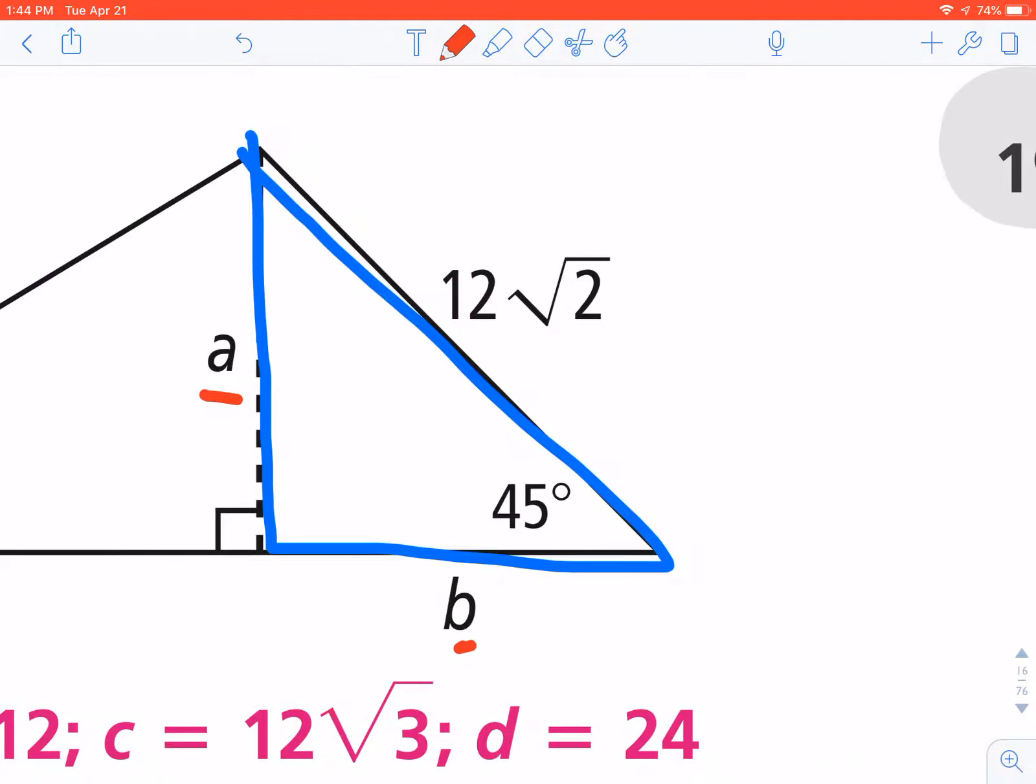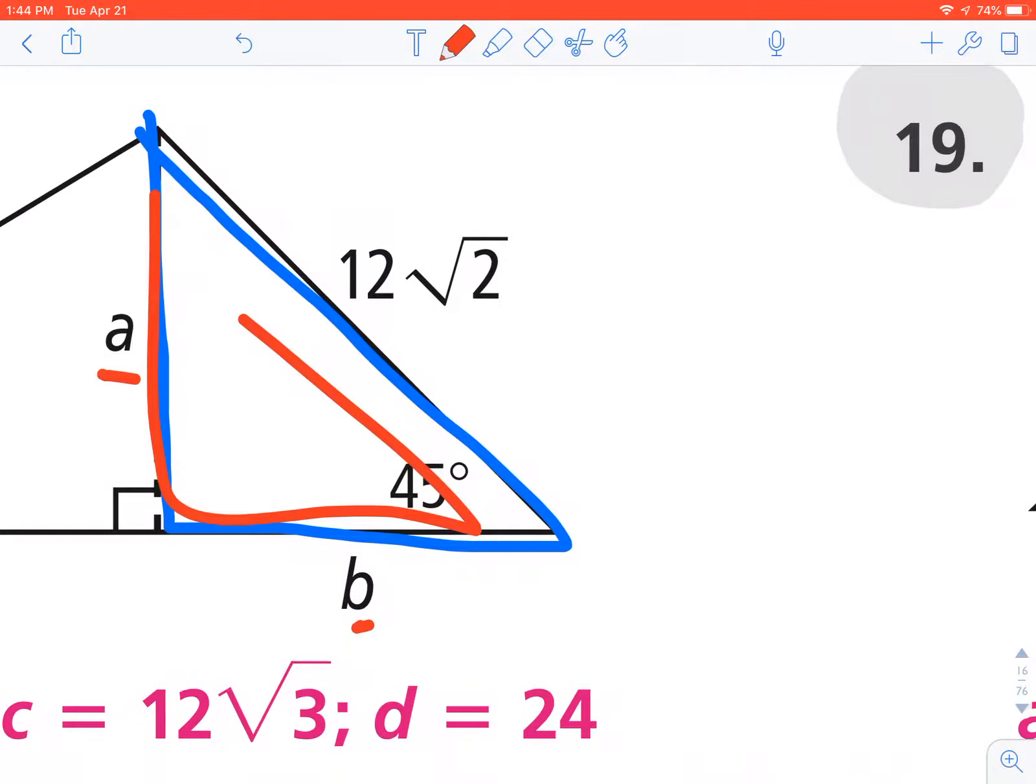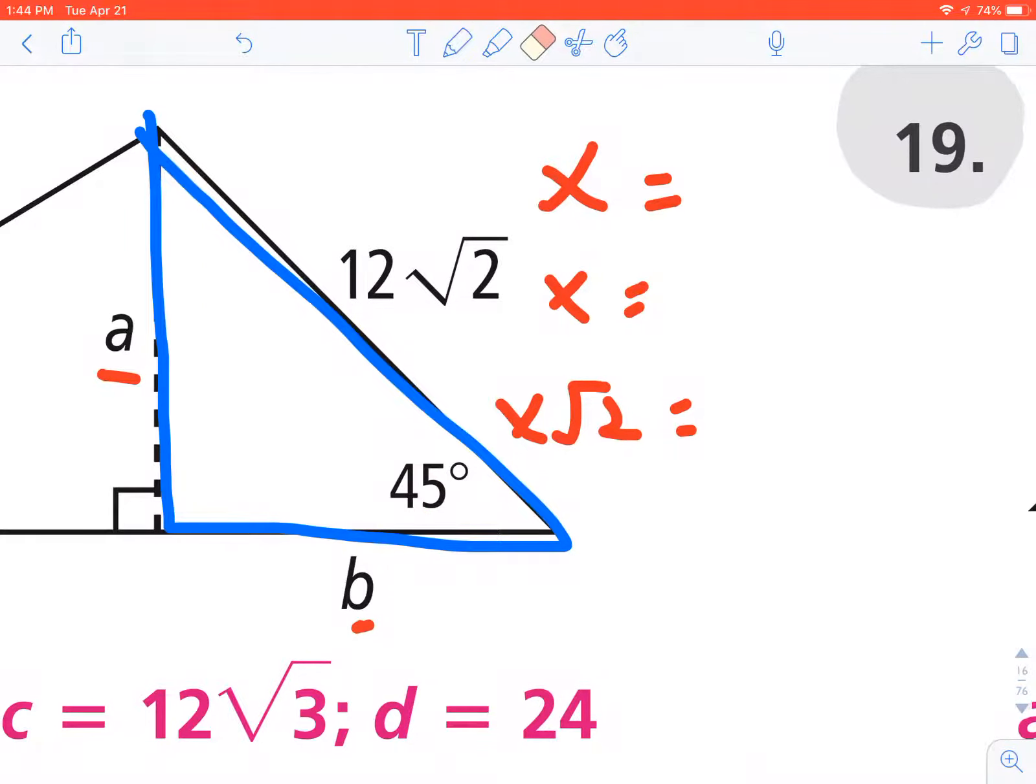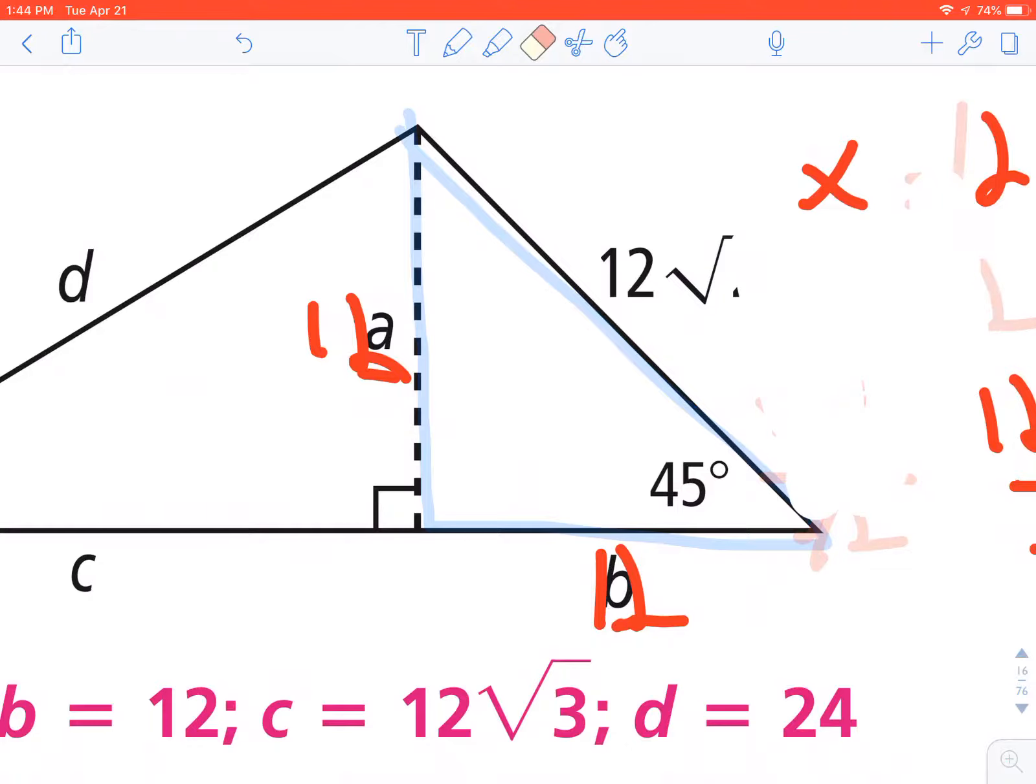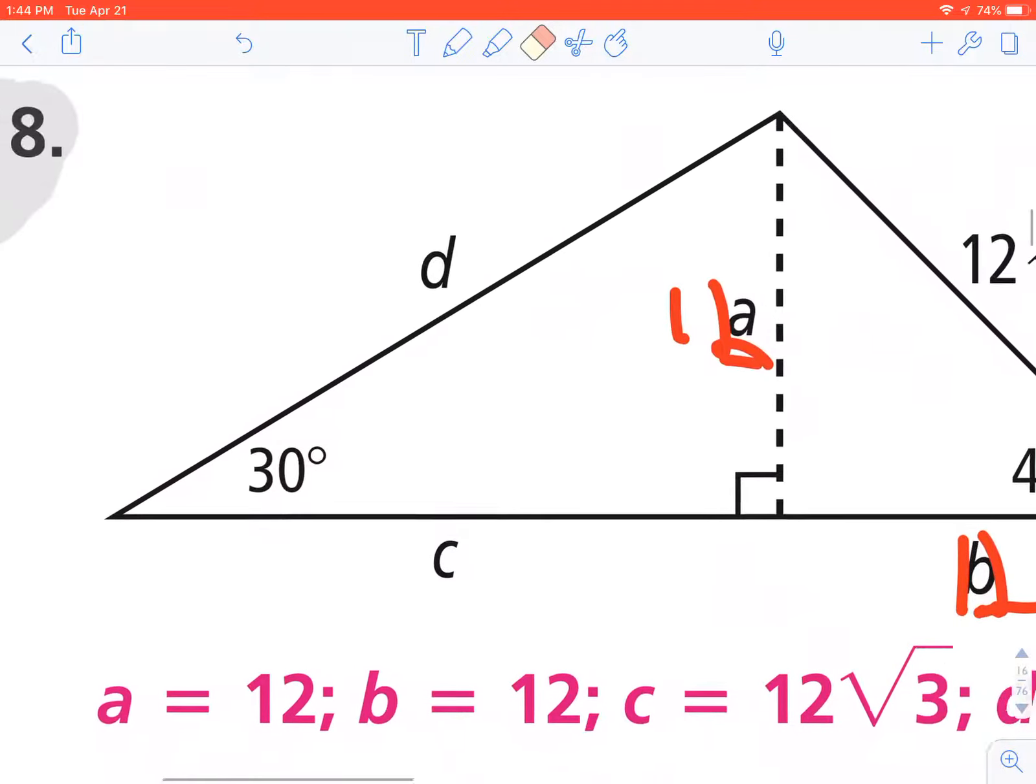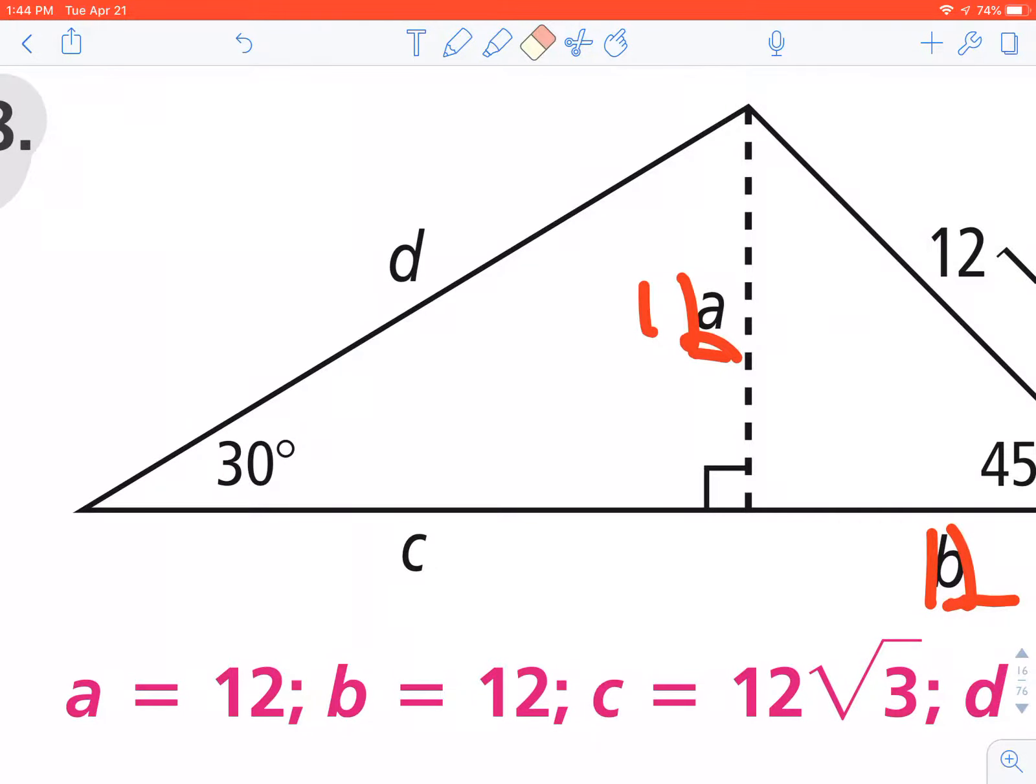So I need to figure out how long A and B are. Well, A and B are going to be the same value because this is an isosceles triangle. So in a 45-45-90 triangle, X, X, X radical 2. And let's go ahead and fill in what I know. I'm given the hypotenuse as 12 radical 2. Solve for X. Divide both sides by radical 2. Cancel, cancel. So both of these lengths are 12.